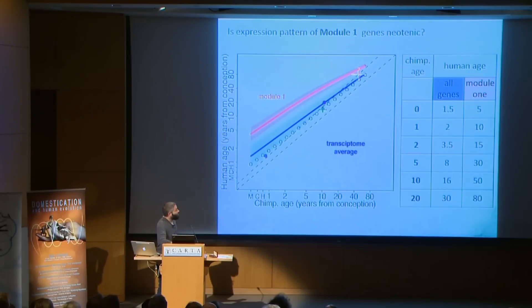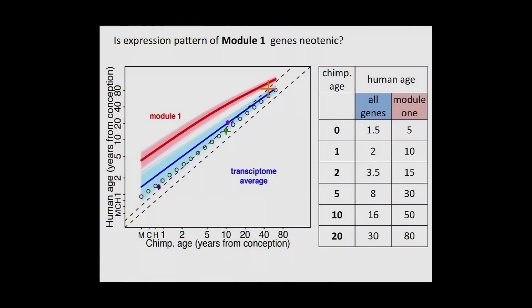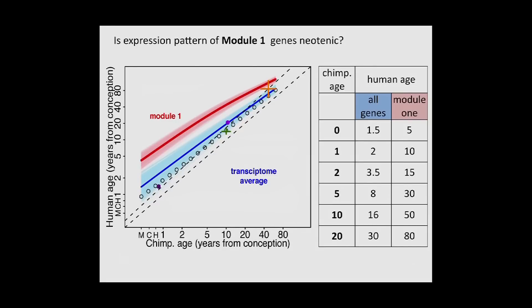So if we're talking about a change of timing, this is basically what we call neoteny — some features of juvenile chimpanzees and macaques present in adult humans. Can we really call it neotenic? Based on these expression curves, we have an advantage: we don't need to guess what kind of age of human corresponds to what kind of age of chimpanzee. If you have a dog, you multiply by seven, but here you can simply look at the expression curves of chimpanzee and human, align them, and based on gene expression you can know what age of human corresponds to what age of chimpanzee.